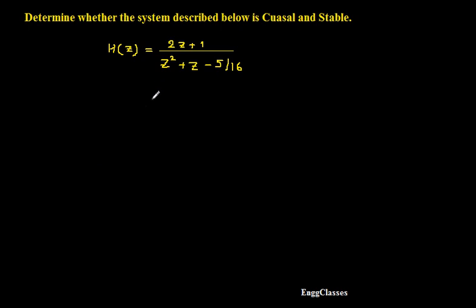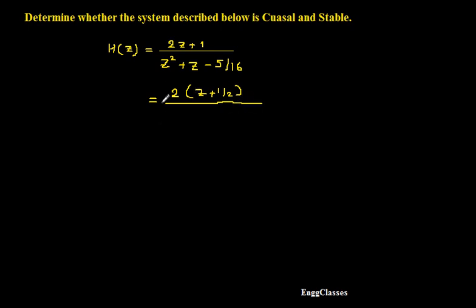For the numerator, I need to write it as a product of terms. In this case I can take 2 out, and I would get (Z + 1/2). Similarly, for the denominator, one needs to factorize it to write the term as a product of terms, so just try to factorize it.